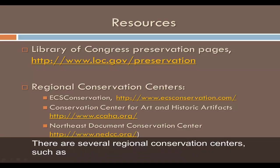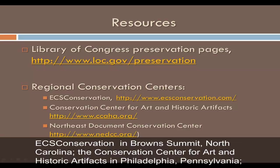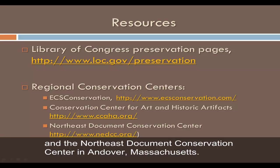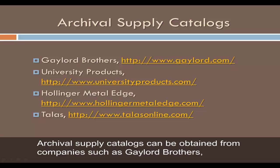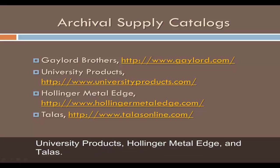The Library of Congress preservation pages contain several links to information about all types of preservation. There are several regional conservation centers, such as ECS Conservation in Brown Summit, North Carolina; the Conservation Center for Art and Historic Artifacts in Philadelphia, Pennsylvania; and the Northeast Document Conservation Center in Andover, Massachusetts. Archival supply catalogues can be obtained from companies such as Gaylord Brothers, University Products, Hollinger Metal Edge, and Talis.